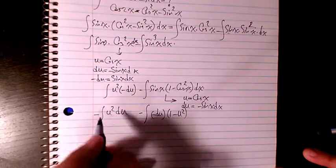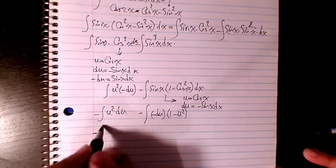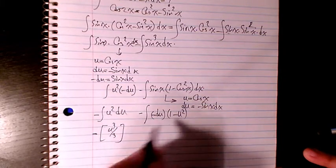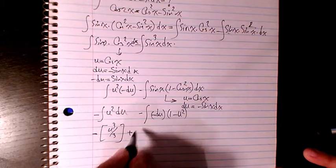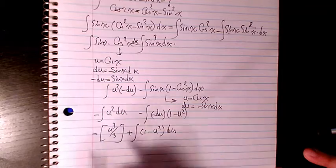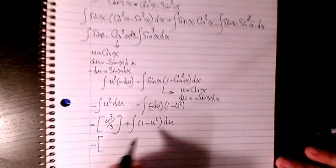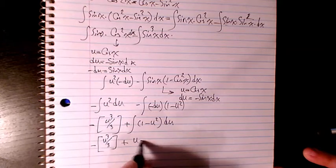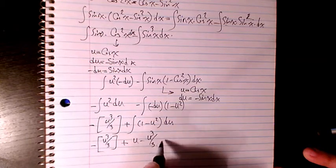So it will be negative u cubed divided by three. Negative times negative is positive, and then it will be one minus u squared du. So then it will be u cubed divided by three, and here I have u minus u cubed divided by three plus c.